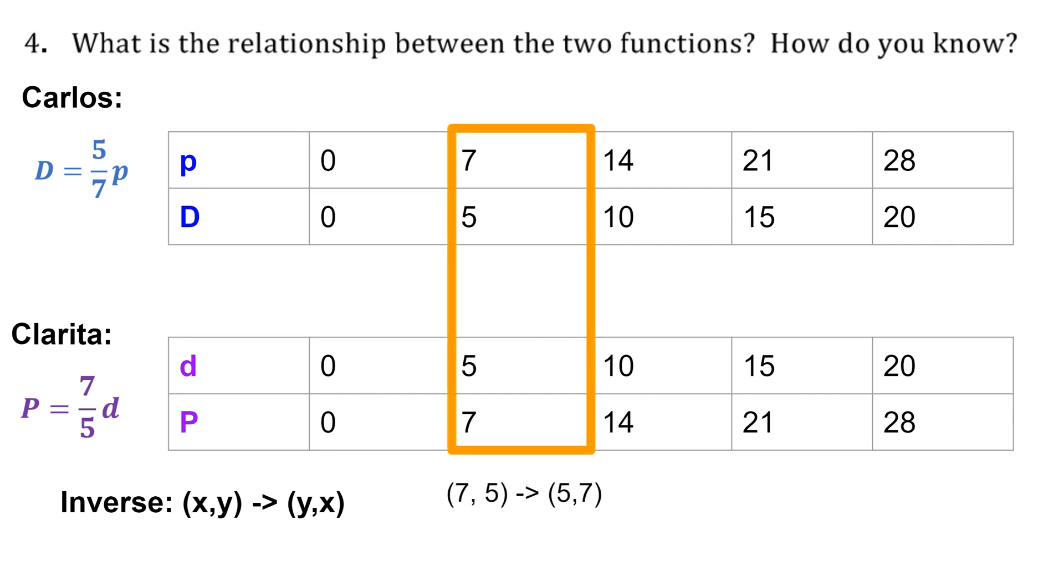For example here 7 comma 5 became 5 comma 7, and over here 21, 15 became 15 comma 21. You can look at all the other points that are lined up in columns and see that xy is becoming yx. So these are inverse functions.